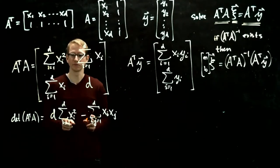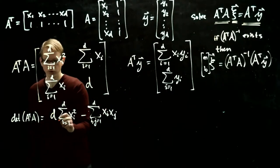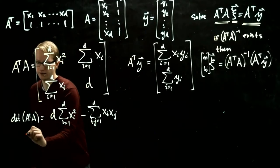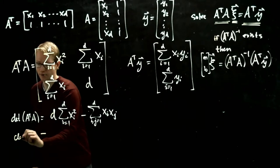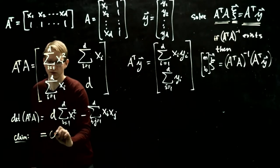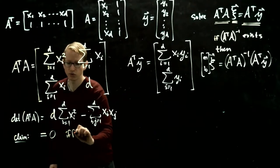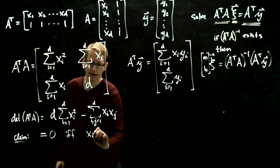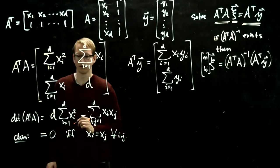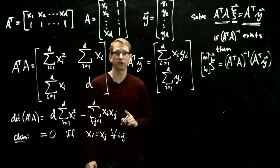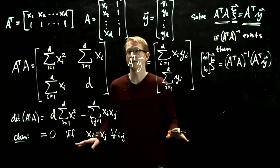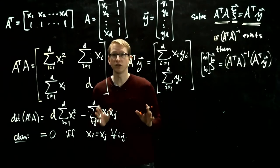So this is the determinant. And I won't do the rest of this calculation now, but I'll make a claim, and you should check this, that this equals zero if and only if Xi equals Xj for all i and j. So the only time that this determinant vanishes is if all of the Xi data points happen to be equal to each other.